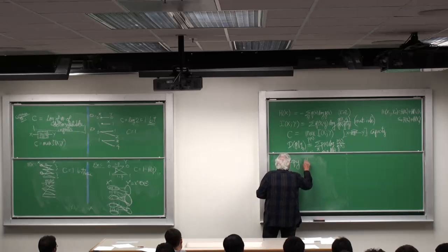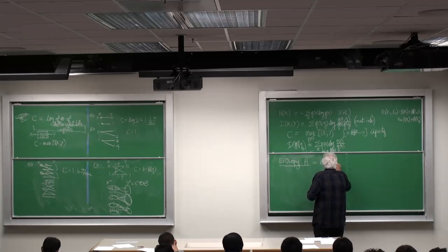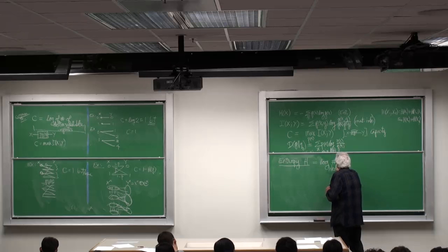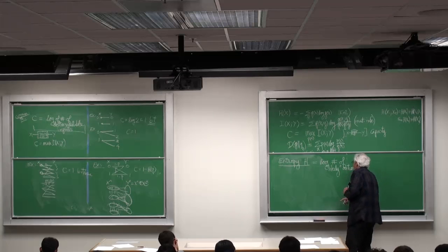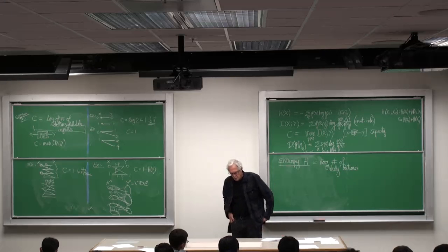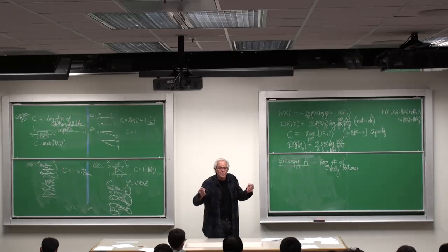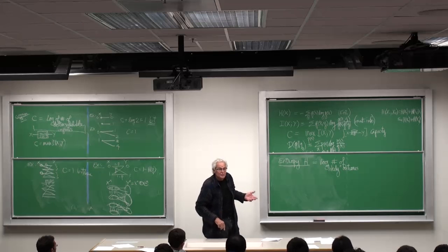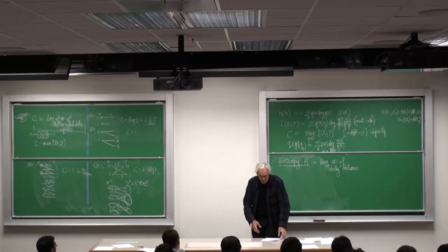Entropy H equals the log of the number of likely outcomes. If I flip a coin n times, two to the n things can happen. If it's a fair coin, they're all equally probable. They're all equally likely. The log of two to the n is n. So the entropy of n coin flips is n bits.